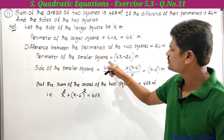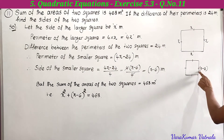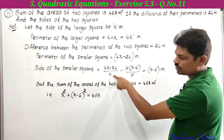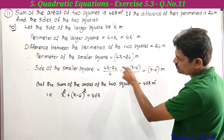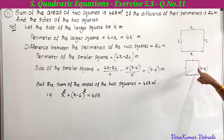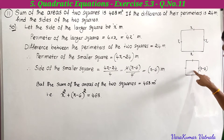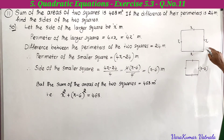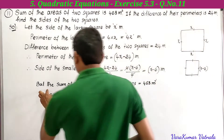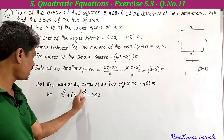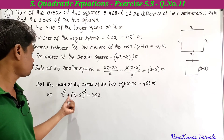To find the side of the smaller square, divide its perimeter by 4: (4x minus 24) divided by 4 equals x minus 6. So the side of the smaller square is (x minus 6) meters. The area of the smaller square is (x minus 6) squared, and the area of the larger square is x squared. Since the sum of the areas equals 468 square meters: x squared plus (x minus 6) squared equals 468.